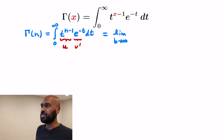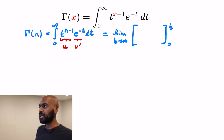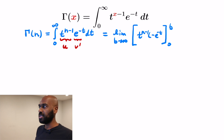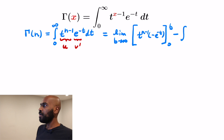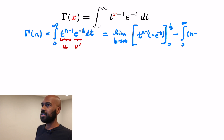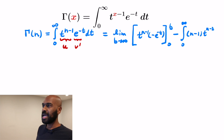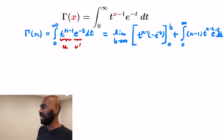We'll let u be t to the n minus 1 and v prime be e to the negative t. Being careful with that infinity, we get by integrating by parts that this is the limit as b goes to infinity of the evaluation from 0 to b of u times v. So that's t to the n minus 1 times negative e to the negative t — that's the antiderivative of e to the negative t — minus the integral of u prime, which is n minus 1 times t to the n minus 2, times v, which was e to the negative t times negative 1. So that negative becomes a plus.